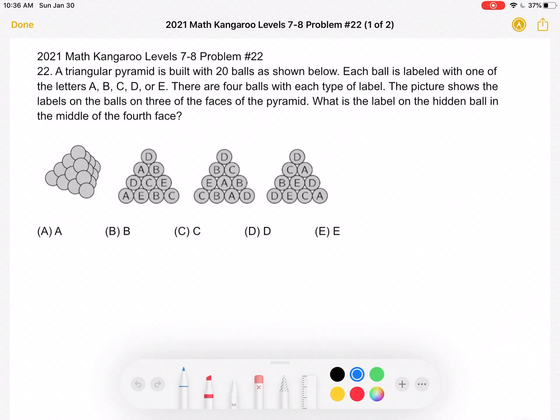This is the 2021 Math Kangaroo, level 7-8, problem number 22. A triangular pyramid is built with 20 balls, as shown below. Each ball is labeled with one of the letters A, B, C, D, or E.